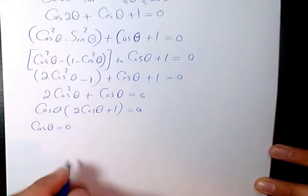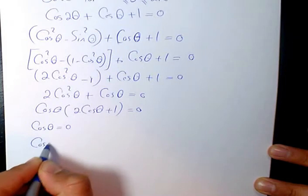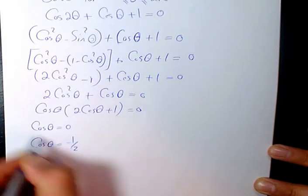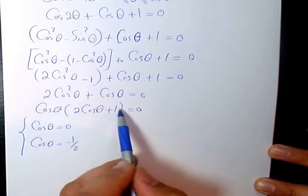One scenario is cos(θ) = 0. The other one is cos(θ) = -1/2. 2cos(θ) + 1 = 0.